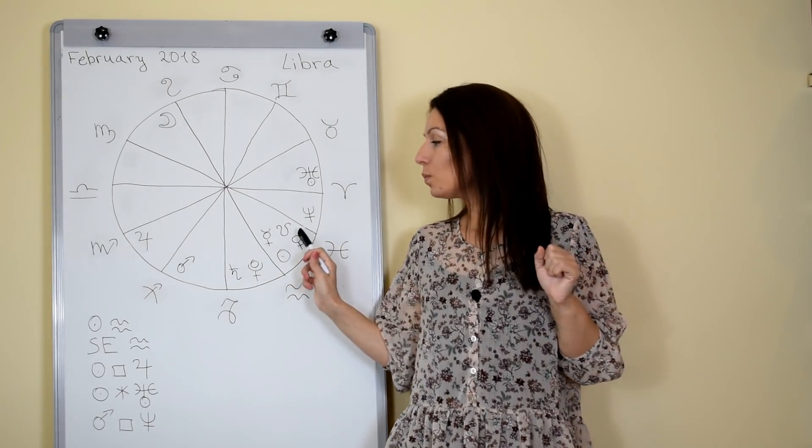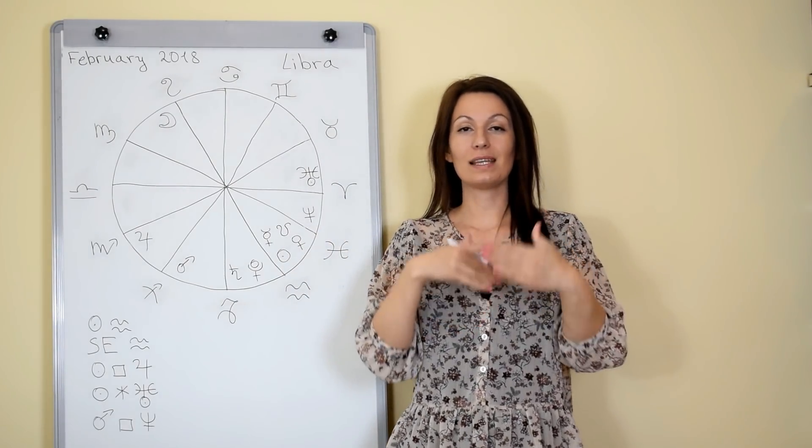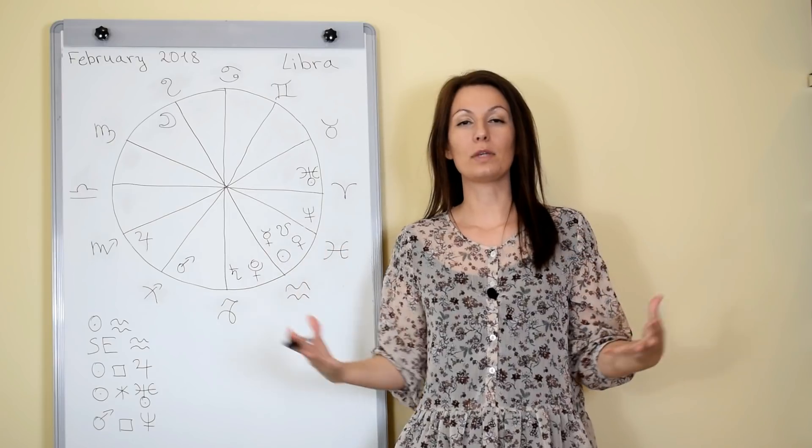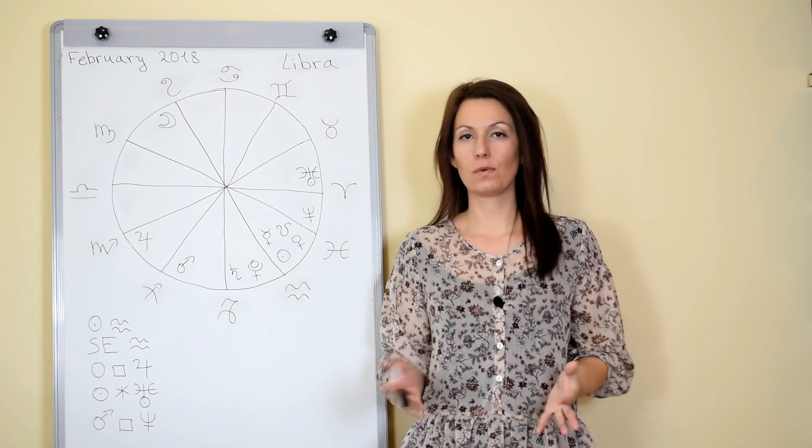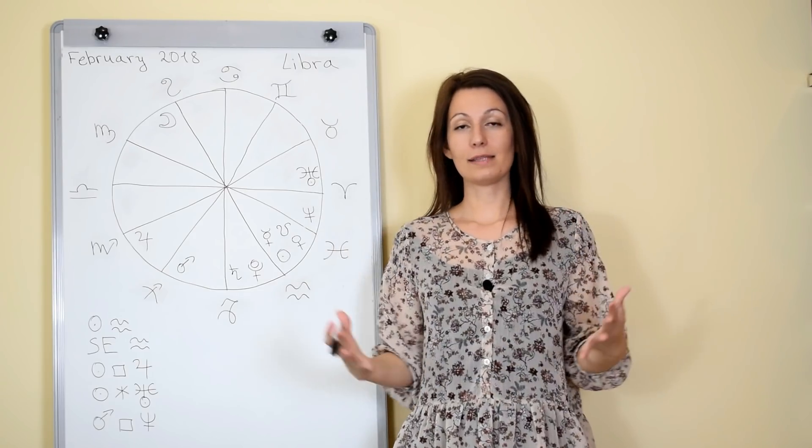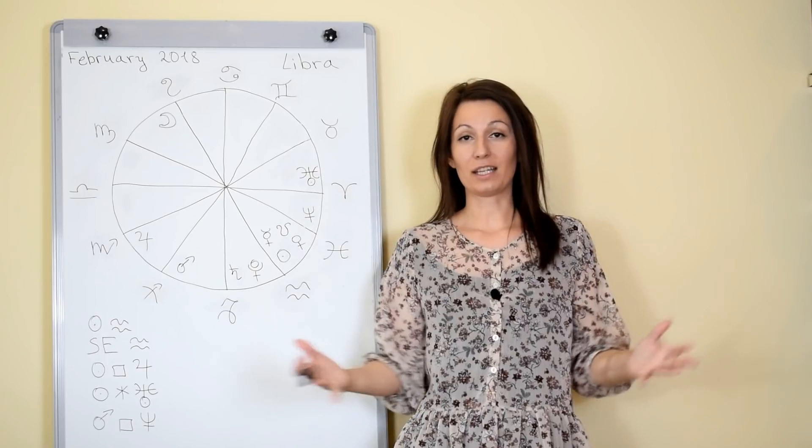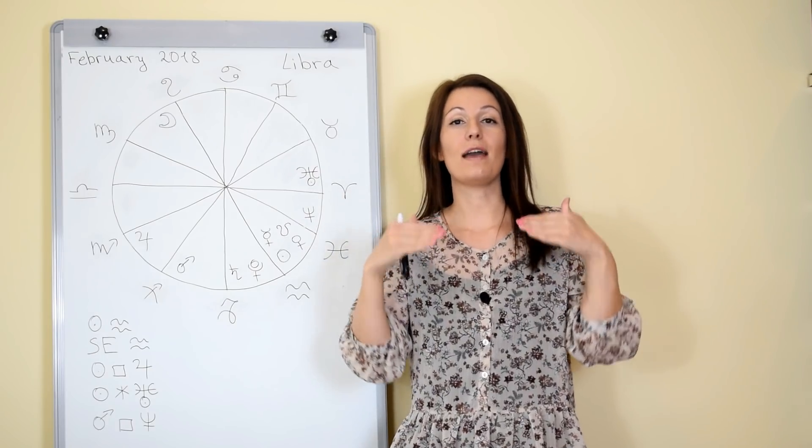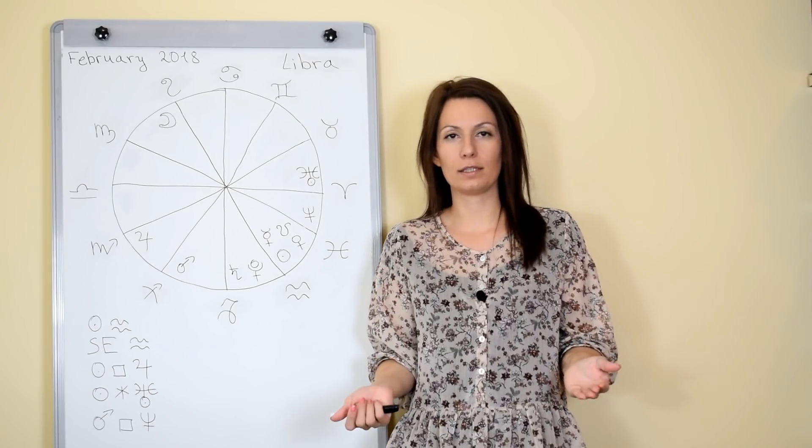Generally Jupiter is a very positive planet related to opportunities and success and growth and all kinds of interesting experiences. However, when we have this square it suggests that maybe something isn't allowing us to feel so happy, to feel like we are growing as much as we want to or we are successful as much as we want to. The exit from this situation is to make a change or to put some effort in certain direction in order to make the needed change.